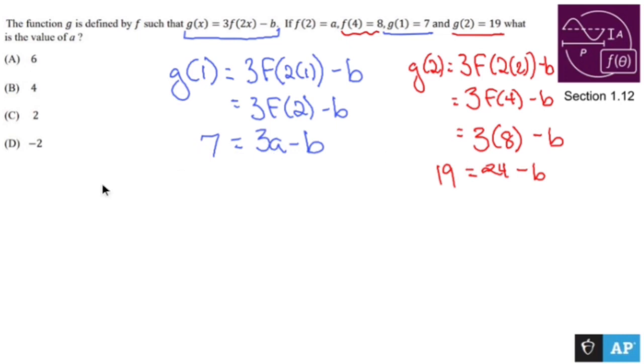let me do this. Because now what I have is I have a system of equations where I have 7 equals 3a minus b, and I have 19 equals 24 minus b. I can find b right here in this equation right here.